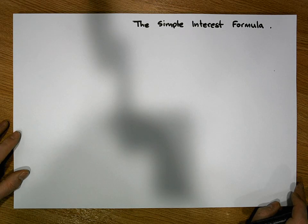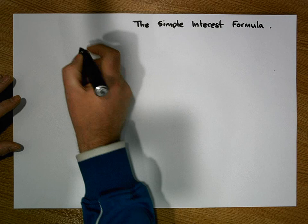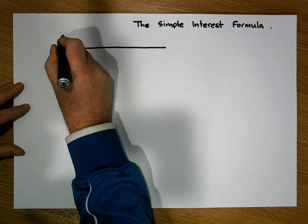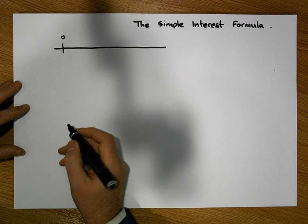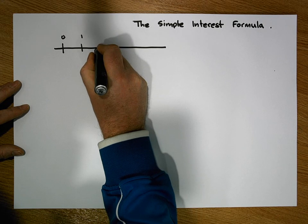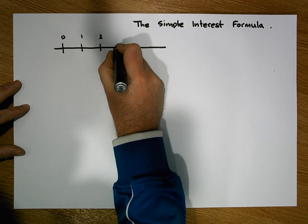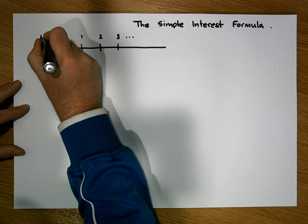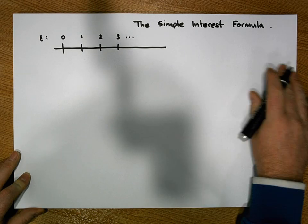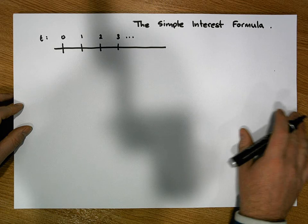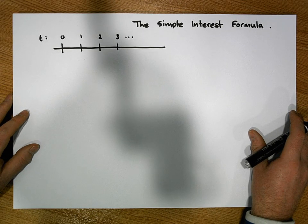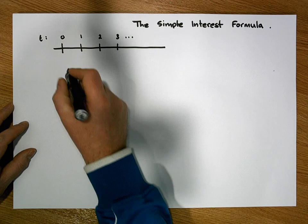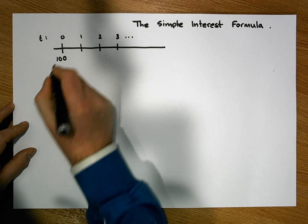Before we get started, let's consider a small example. We have a timeline where time today is defined to be zero, one means one year has elapsed, two represents two years, three represents three years, and so on. Let's call this the t-axis for time. Let's assume we have a savings account and we place €100 in it at time zero — in other words, today.